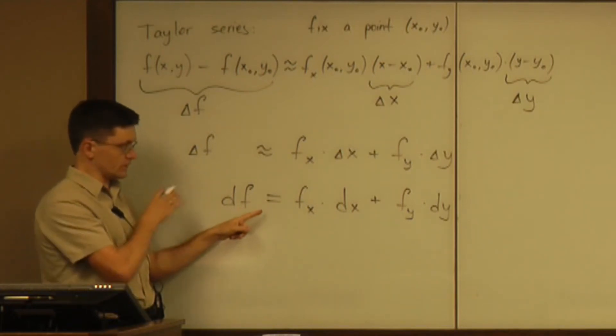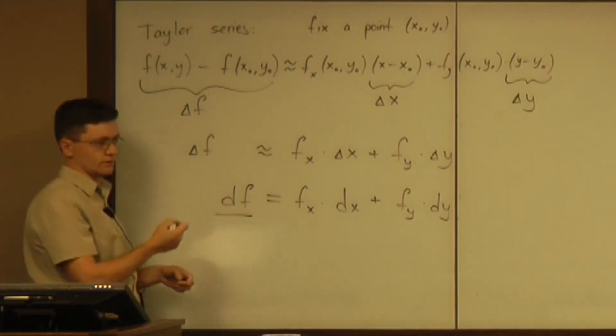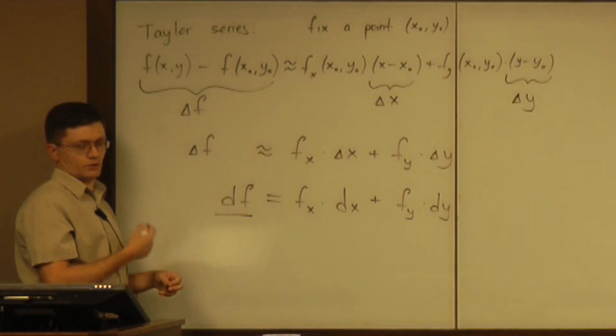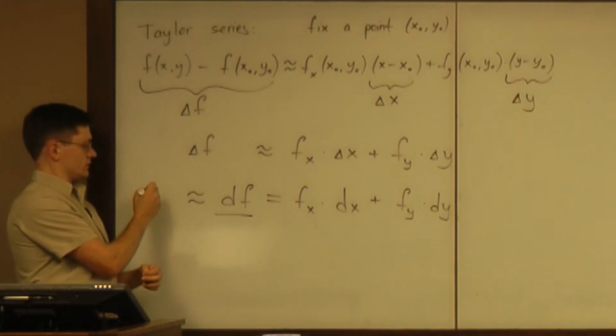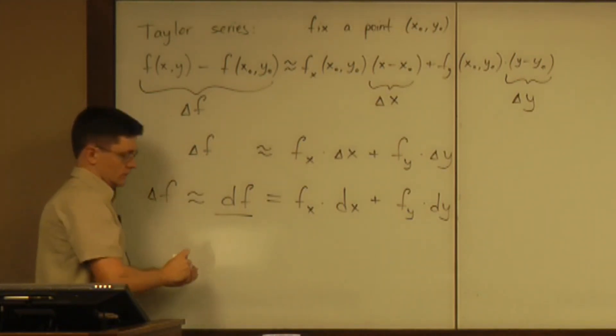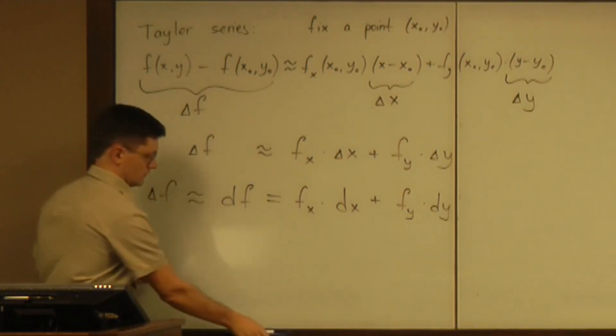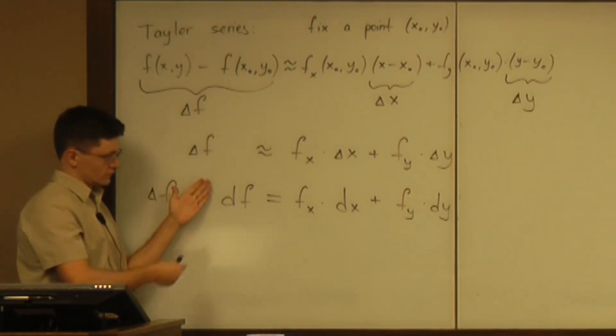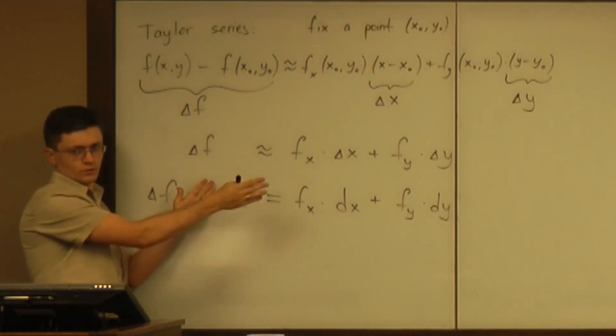So this equality is by definition. This is how you define that differential. Now the outcome of that is that this differential happens to be approximately equal to something interesting, something you would probably want to know, the real change of f. So you shift this uncertainty in reducing this notation. And this is what you can effectively compute and work with.